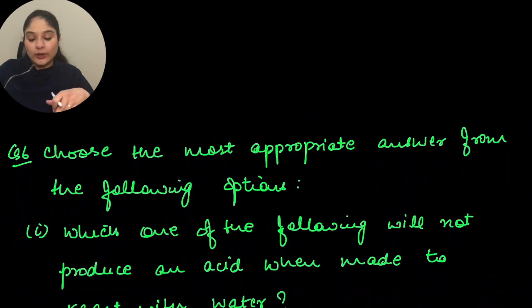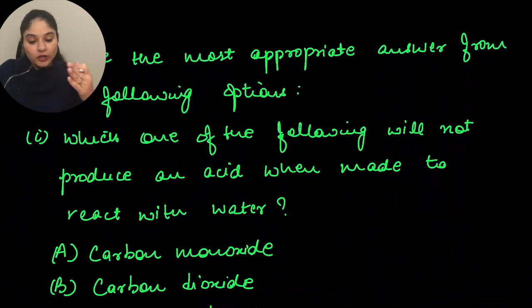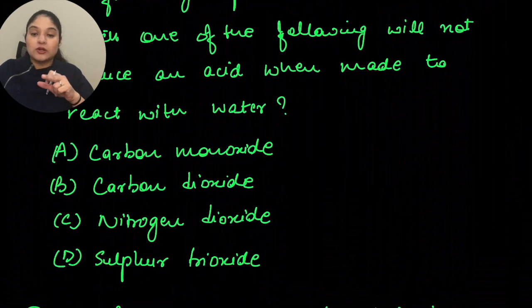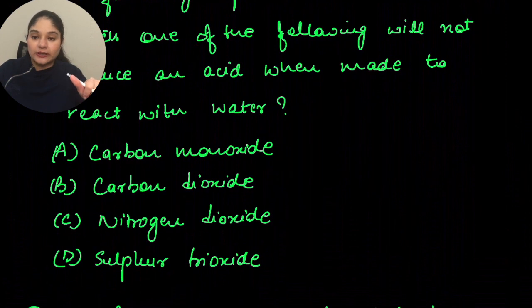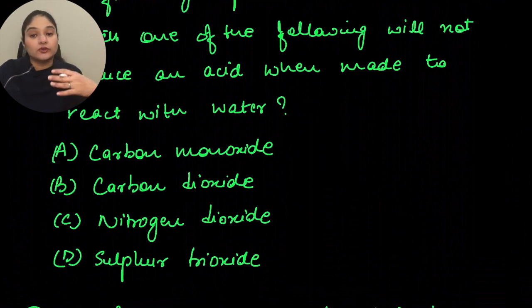Question six: which one of the following will not produce an acid when made to react with water? The answer is carbon monoxide, because it will not create an acid. Carbon dioxide creates carbonic acid, nitrogen dioxide gives nitric acid, and sulfur trioxide gives sulfuric acid. So the answer is carbon monoxide.